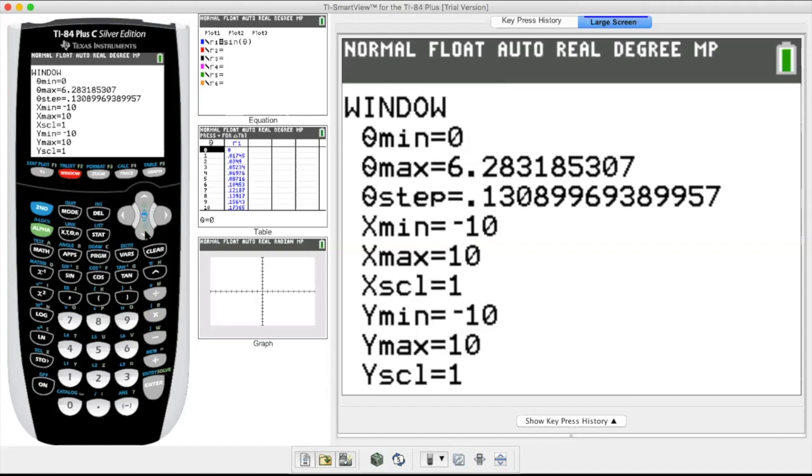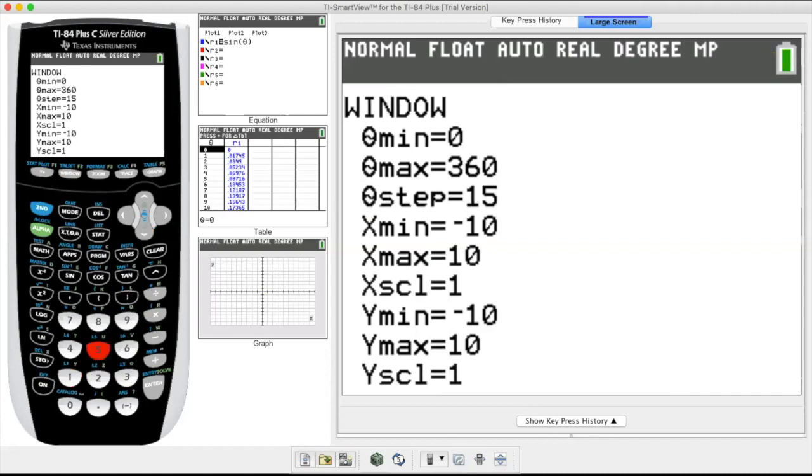We're going to go from zero degrees to 360. And let's do, this would be our angle step or degree step. Let's go in 15 degree increments. So I'm going to change that to 15.